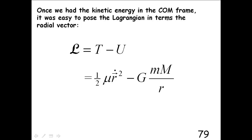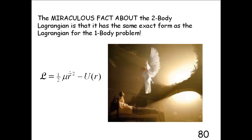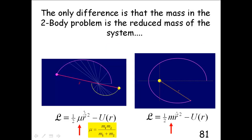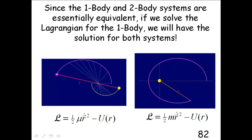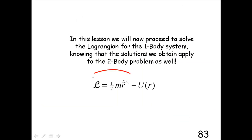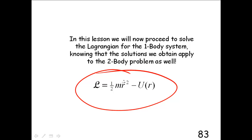Once we have the kinetic energy in the center of mass frame, it's easy to pose a Lagrangian in terms of that radial vector with the gravitational potential. The miraculous fact we learned is that the two-body problem is exactly analogous to the one-body problem — the only difference is that you use the reduced mass μ in the Lagrangian. Otherwise it looks exactly like the Lagrangian for a one-body system, like a comet orbiting the Sun. So by solving the Lagrangian for the one-body, we'll have the solution for both systems.